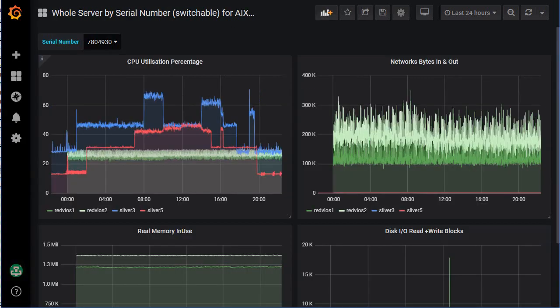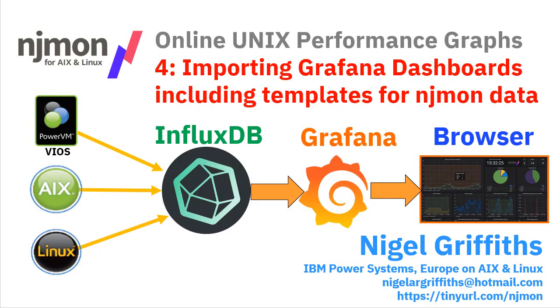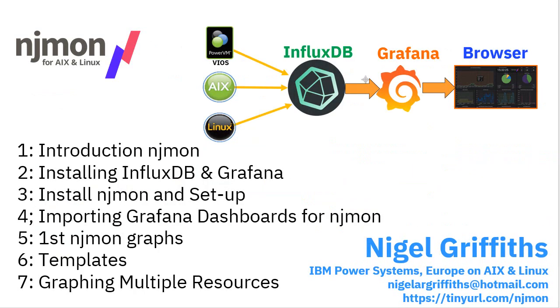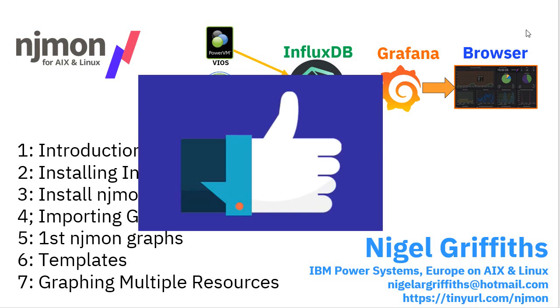I hope these templates will be a good starting point. They need further development, but the njmon project supplies the data — you've got enough dashboards and graphs to study your machines the way you want to. I look forward to cooperating with others to create better and more detailed dashboards. So we're done looking at importing Grafana dashboards including templates for njmon data: one for Linux, one for AIX, and one for complete machines. Next up we'll work on a dashboard for the Virtual I/O server and virtual resources. Video five in the series covers creating your first Grafana dashboard graphs for your njmon data. All seven videos in the series are available — if you've enjoyed this and learned something, please give us a thumbs up.